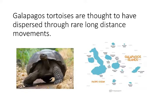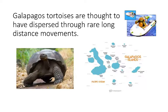Other species thought to have dispersed through rare long-distance movements across islands include Galapagos tortoises. The Galapagos Islands are a grouping of islands separated by oceanic water, and researchers think these tortoises reached different islands through rare long-distance movements — they likely rafted there on logs or something. That's where the picture from the module teaser comes in: when I googled 'turtle and raft,' I got a picture of a tiny Teenage Mutant Ninja Turtles raft toy. These tortoise populations are now distinct because of rare colonization events with no continuous movement between the islands.